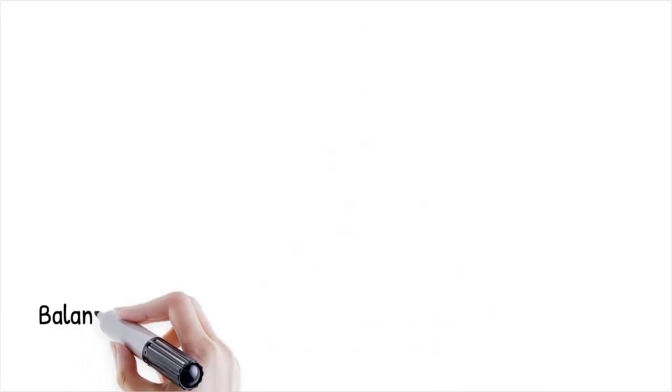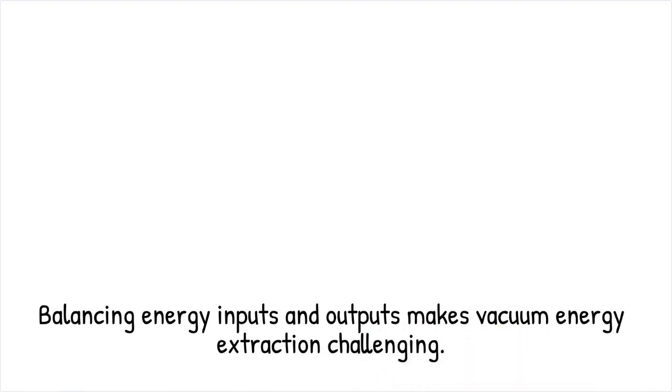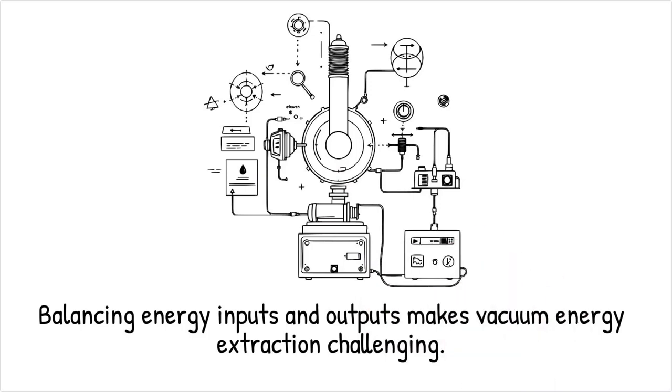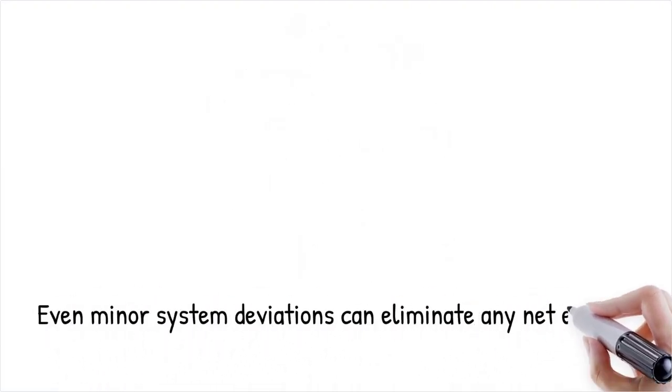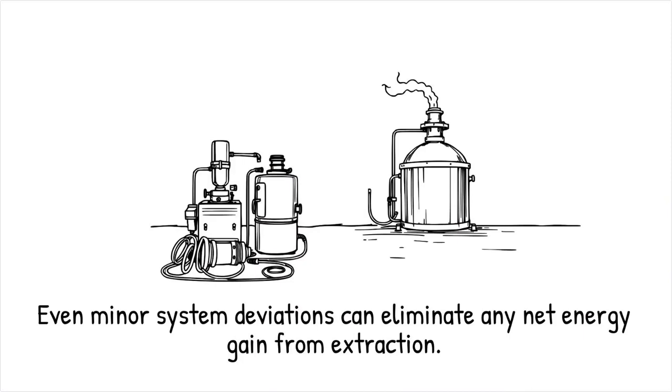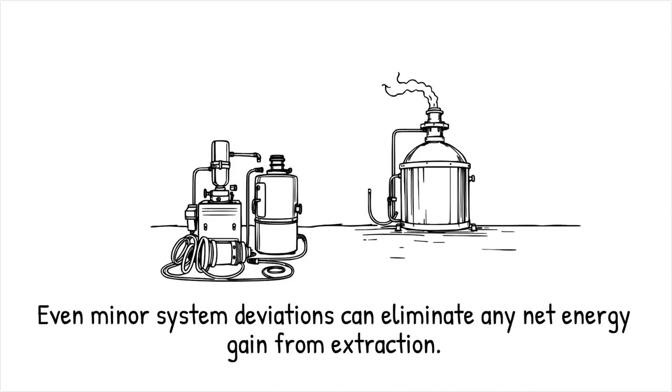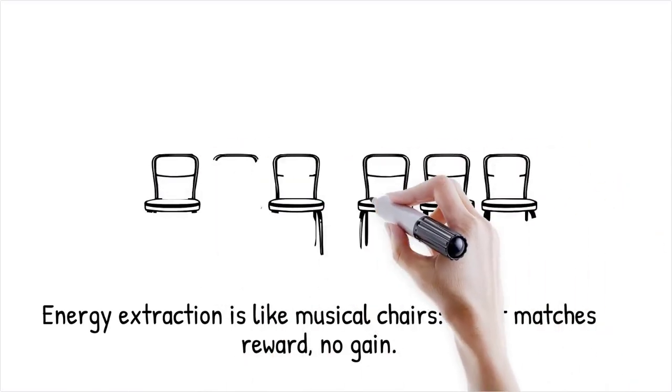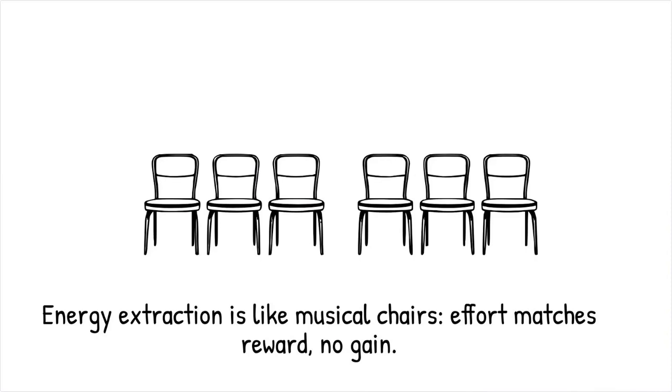Modeling the quantum vacuum and designing an apparatus for energy extraction poses significant challenges due to the delicate balance of energy inputs and outputs. Even if transient energy outputs are observed, ensuring that they are not offset by the energy required to initiate the extraction process remains a major hurdle. Small deviations in system parameters or inaccuracies in energy accounting can quickly nullify any perceived gains. Theoretical models that simulate vacuum energy extraction demonstrate that any configuration yielding photons or other particles from the vacuum necessitates an equivalent external input, leaving no room for excess energy. It is like trying to win a game of musical chairs where the number of chairs never exceeds the number of players. The extra effort expended to secure a chair (energy input) always matches the reward (energy output), resulting in a stalemate.